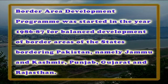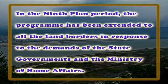Next are border areas. The Border Area Development Program was started in 1986-87 for balanced development of border areas of the states bordering Pakistan, namely Jammu and Kashmir, Punjab, Gujarat and Rajasthan. During the eighth plan, the program was revamped and its coverage was extended to the states on the eastern border with Bangladesh. In the ninth plan period, the program has been extended to all land borders in response to the demands of the state governments and the Ministry of Home Affairs. In 1997-98, BIDP was extended to states bordering Myanmar.